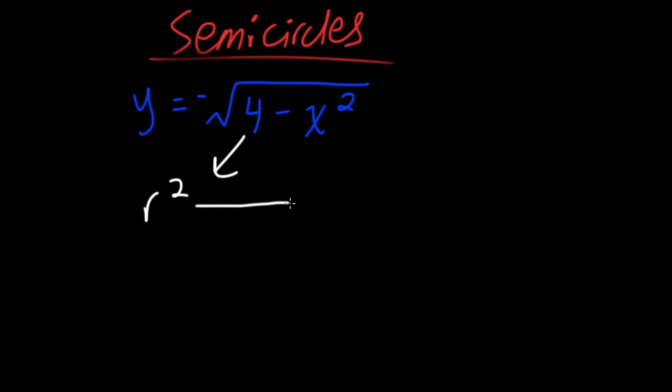So, to get our actual radius and not radius squared, we need to square root that 4, which gives us 2. So, our semi-circle will have a radius of 2.